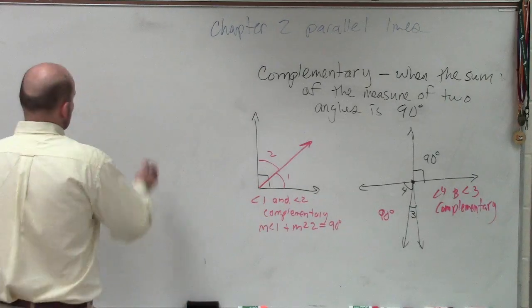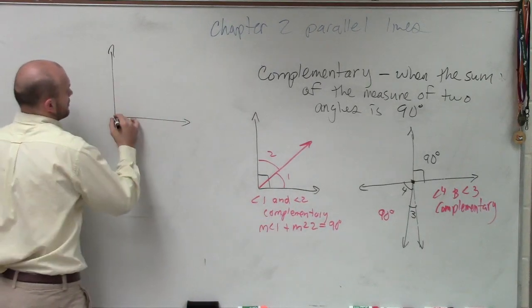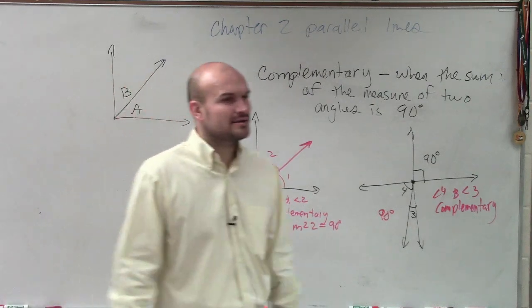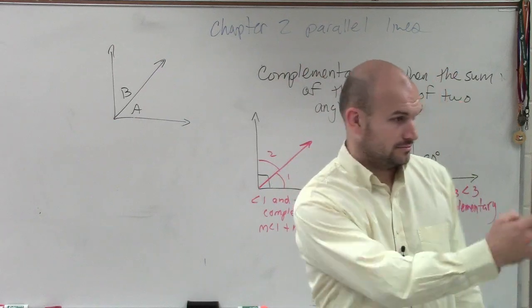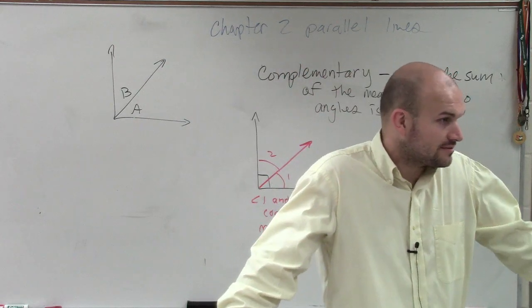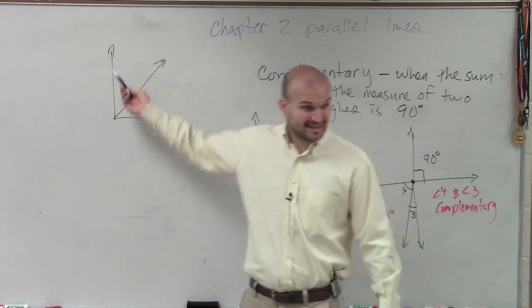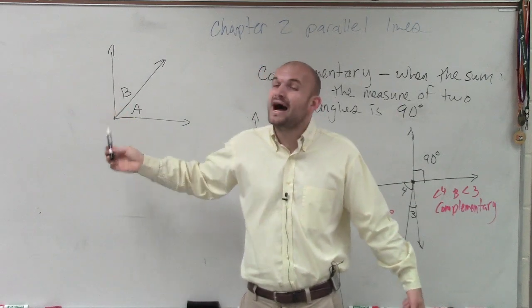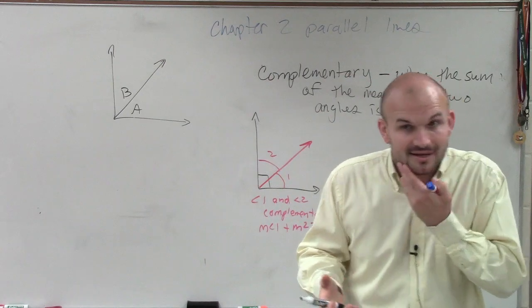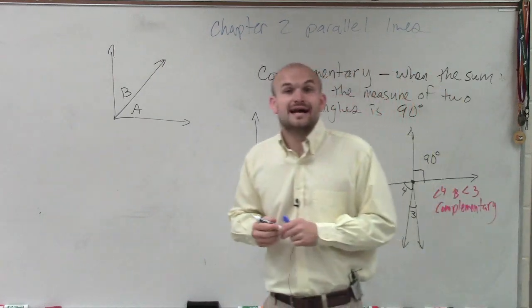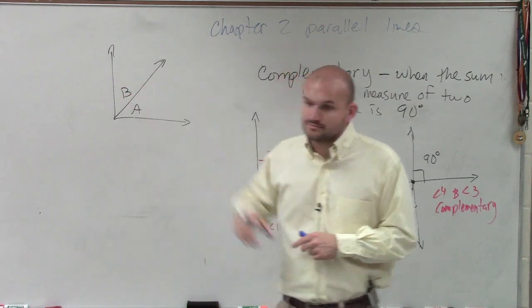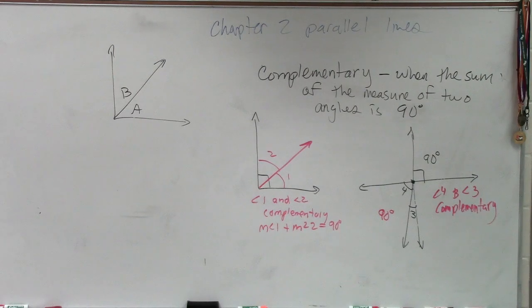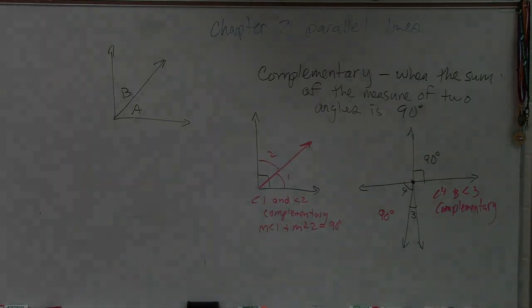Here's an example of one that's not complementary. Does anybody know why? There's no box. How do you know it's 90 degrees? All I said is these two angles. Does it look like they add up to 90 degrees? It looks like it, but there's no box or nothing telling you that it adds up to 90 degrees. You cannot assume they're going to add up to 90 degrees.